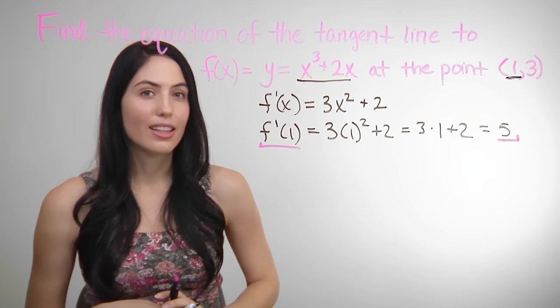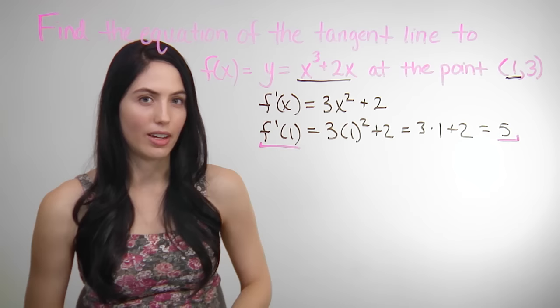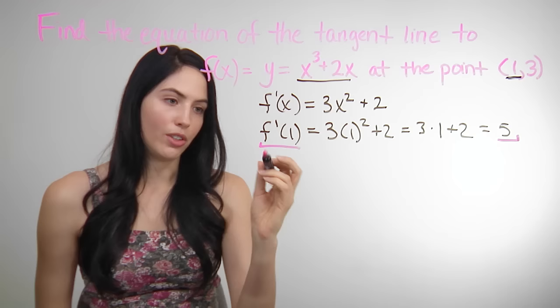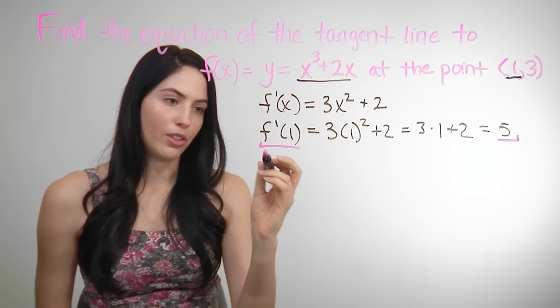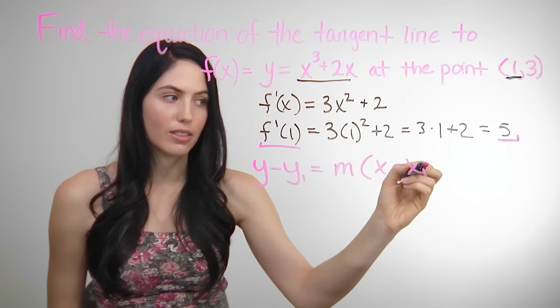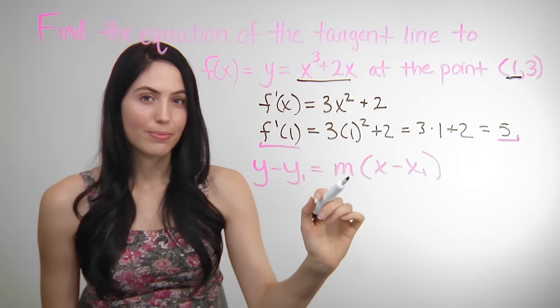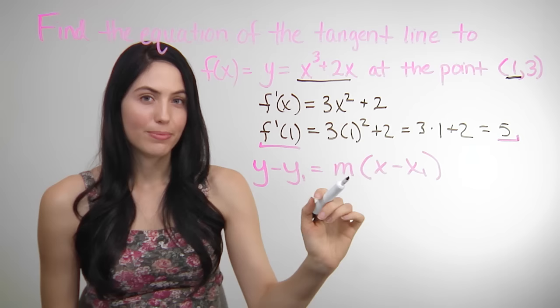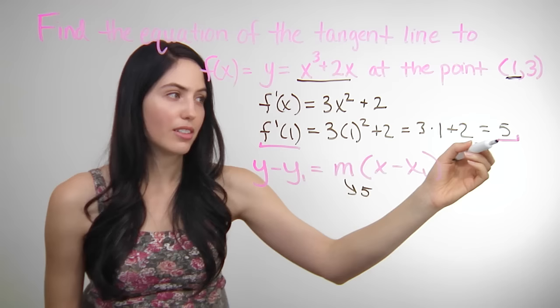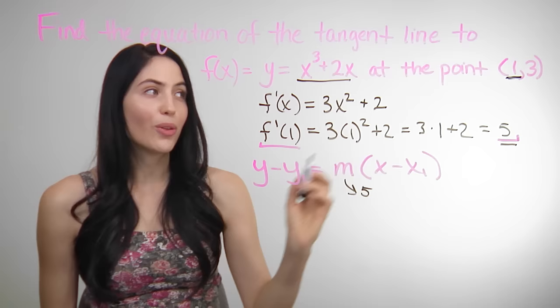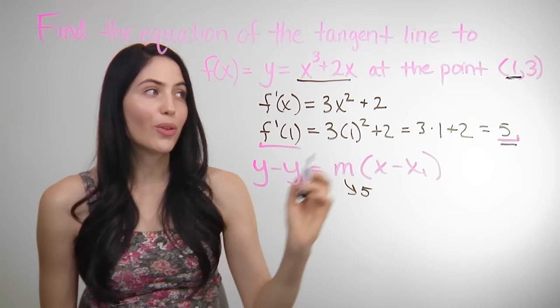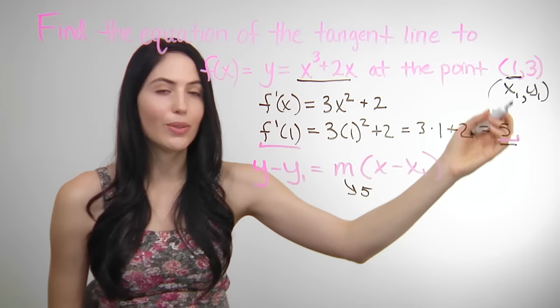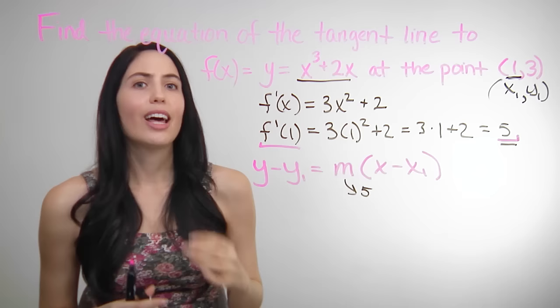The last step is to plug in the numbers that you've found into the point-slope formula for a line. The point-slope formula in general looks like y minus y1 equals m times x minus x1. m is just your slope, and that's going to be the f prime value that you found when you plugged in x. So your m in this problem is 5. x1 and y1 are the coordinates of the point that you found or that you were given.